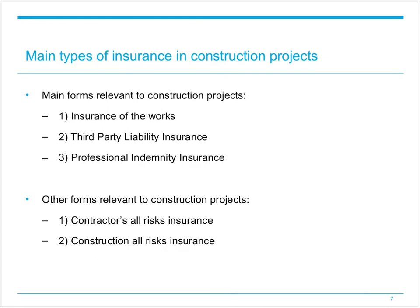While all insurance policies compensate for losses from insured risks, there are various forms. In construction, the main types required on projects are: firstly, insurance of the project works; secondly, third-party liability insurance; and thirdly, professional indemnity insurance. Many contractors also carry Contractors All Risk Insurance covering a package of known and specified risks, or certain projects may require Construction All Risk Insurance, which bundles together insurance of the works, third-party liability, and professional indemnity insurance.